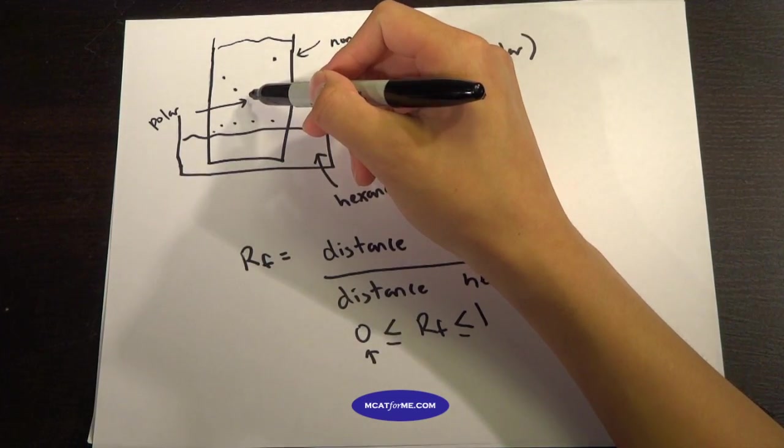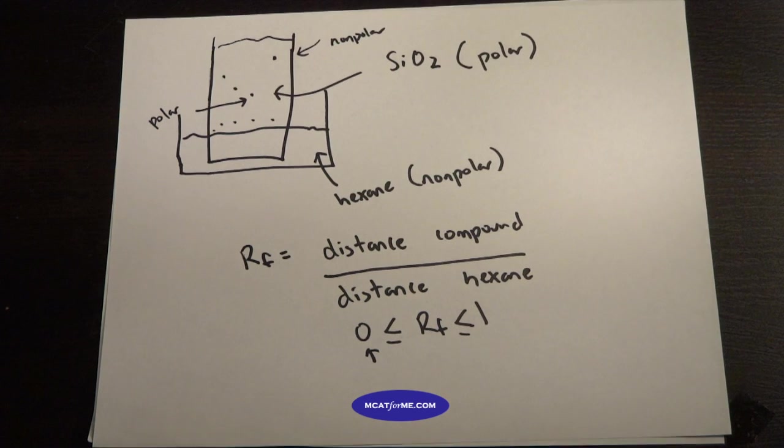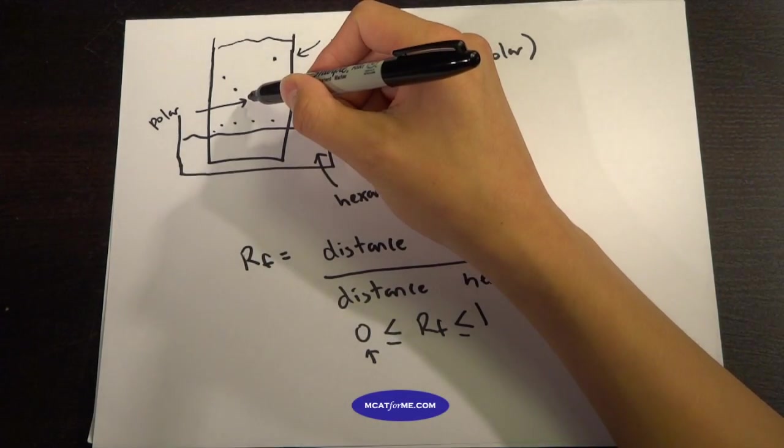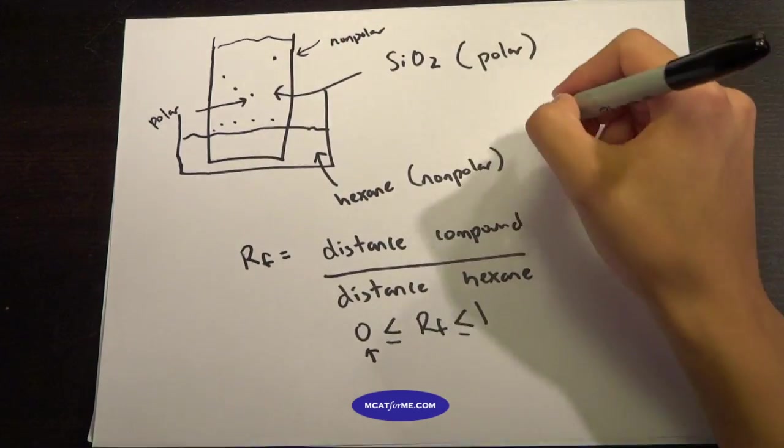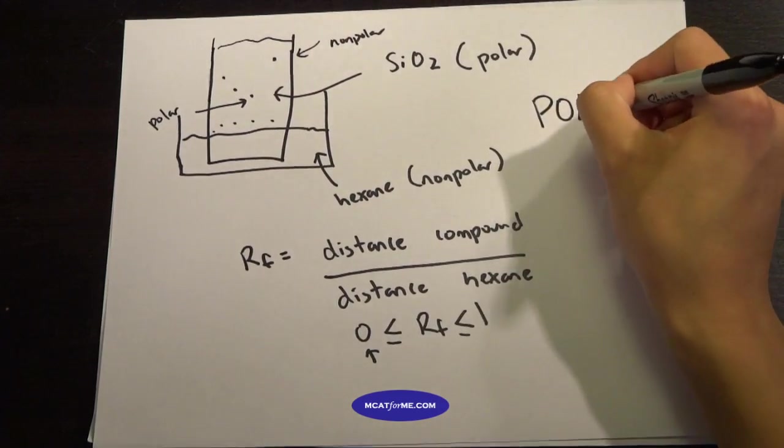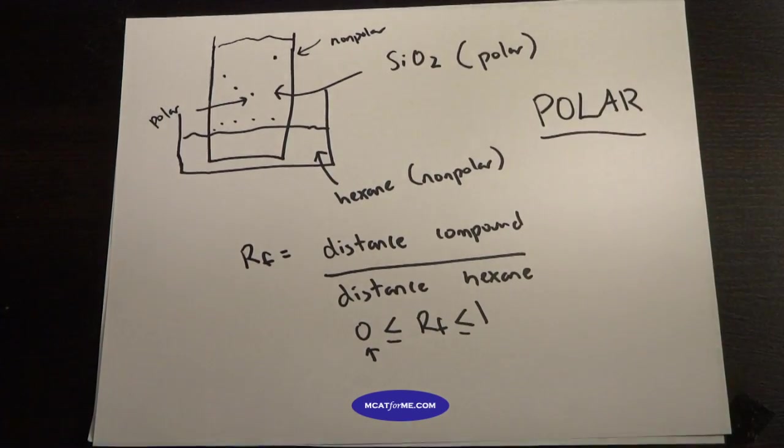So this one at the very, very lowest, and the question asks us which one has a 0.4 RF value, which was the lowest of the four numbers. That means it will be the lowest on the TLC paper, which means it's the most polar. So we want to find the molecule that's most polar.